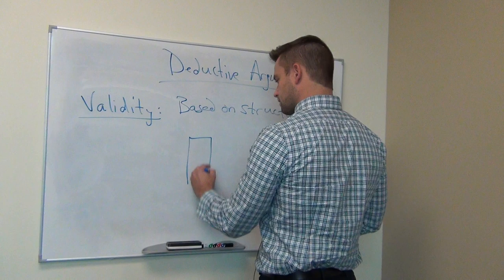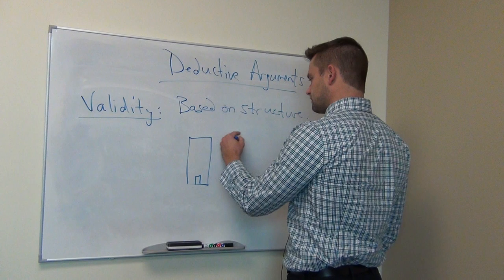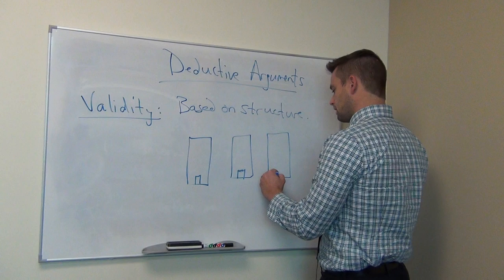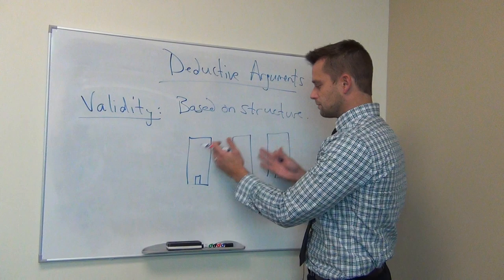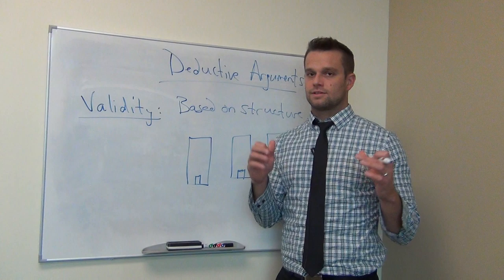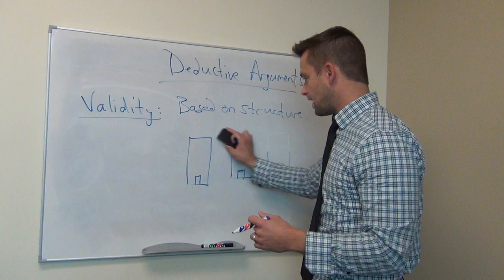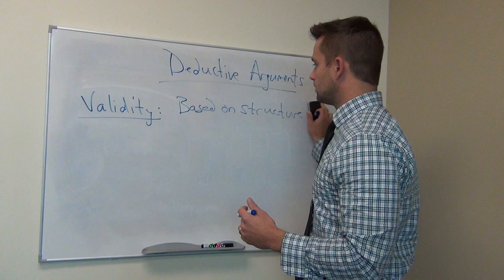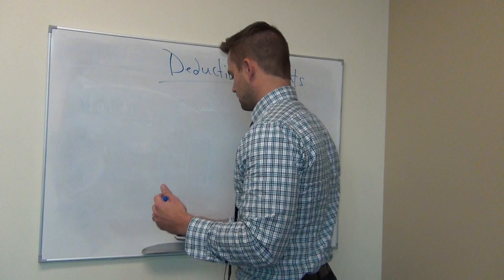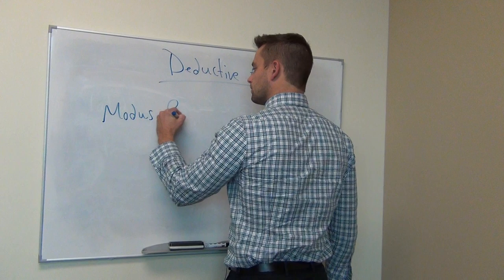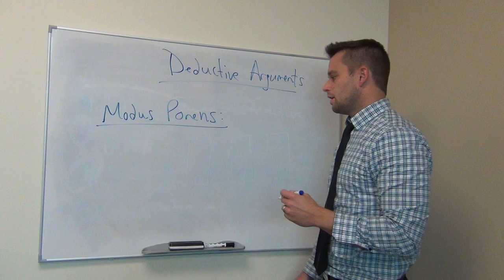Because validity is based on structure, if you use the same structure each time — imagine this is a building — if you create the same structure under the same conditions, then the outcomes will be the same. It's the same with validity and deductive arguments: if you use the same structure each time, it's valid no matter what. It could be the case that you use premises and conclusions that are out of this world or don't make any sense at all, but it's still a valid argument. Let's look at an example of a valid argument.